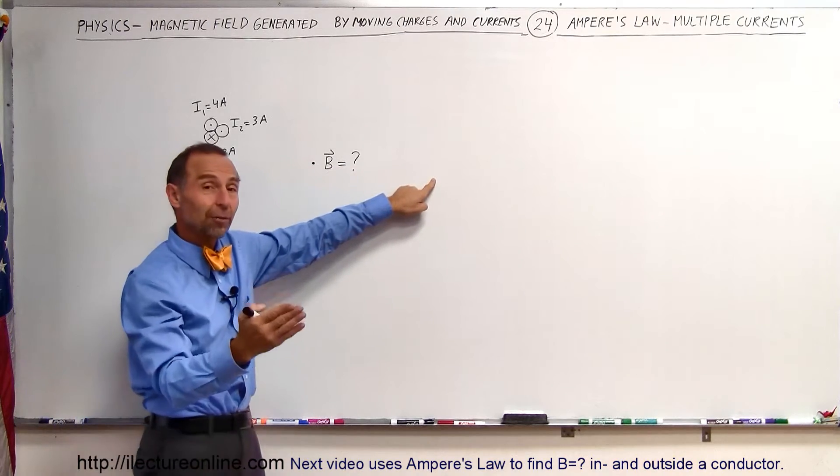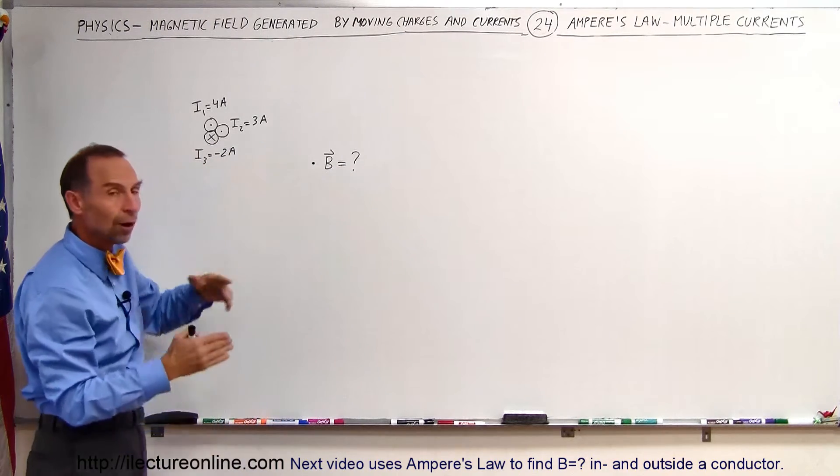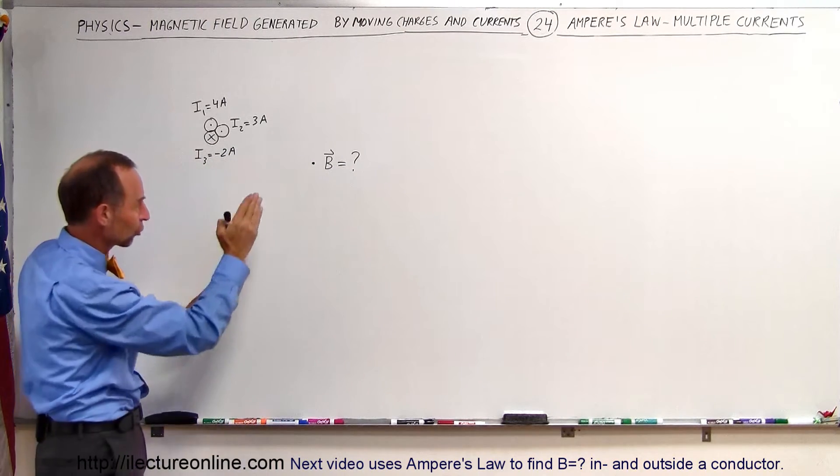Now, if that point had been over here, you'd draw a very big circle. If the point had been closer, you'd draw a much smaller circle as long as the circle goes right to that point.